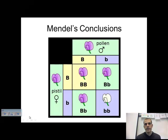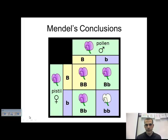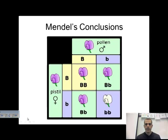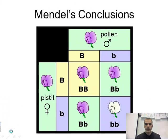Hello again, Biology 300 students. Mr. Parker here, and this is the third screencast for the genetics unit. This one's on Mendel's conclusions and the three laws and the dihybrid crossing.